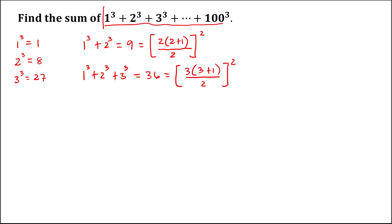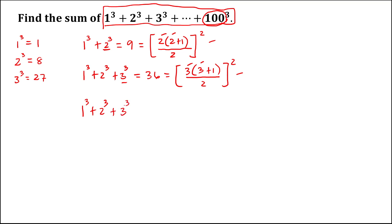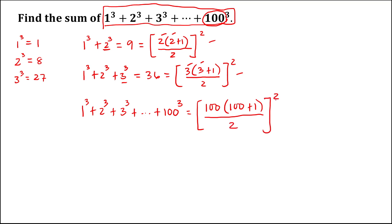So for this series, to find the sum from this equation, take note that the last term is 100. So we can write this as 1 to the power 3 plus 2 to the power 3 plus 3 to the power 3 plus ... plus 100 to the power 3. Since the last term is 100, this is equal to 100 times 100 plus 1, then over 2, to the power 2.